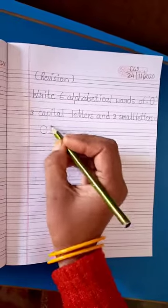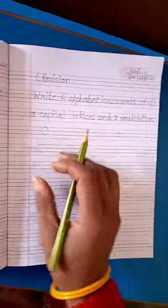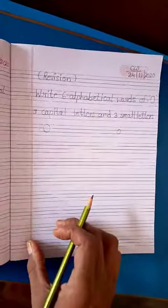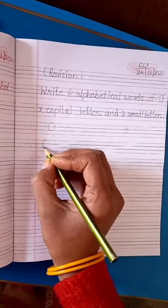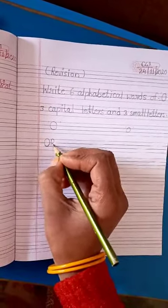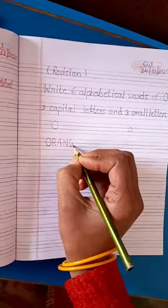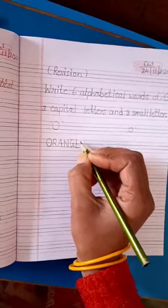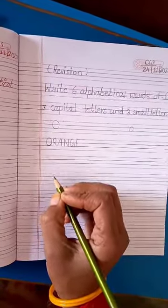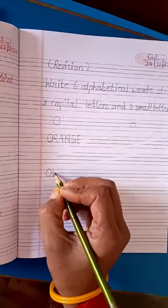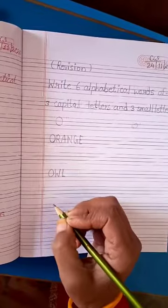O capital and O small. One line we will leave, then we will write three capital first. ORANGE. Orange O, R, A, N, G, E. Orange.